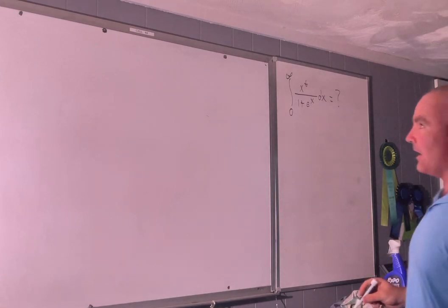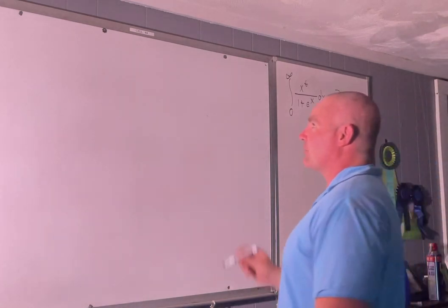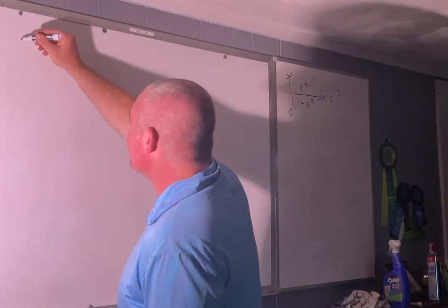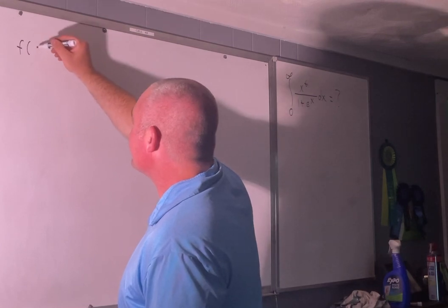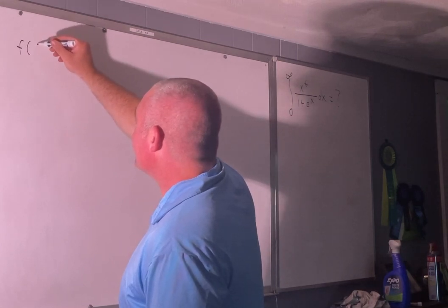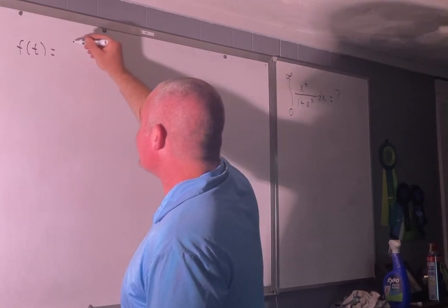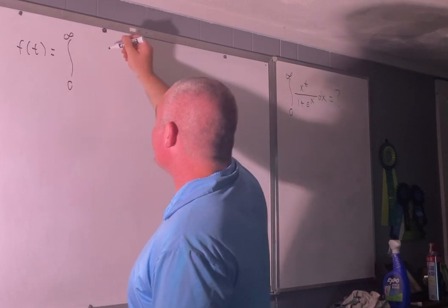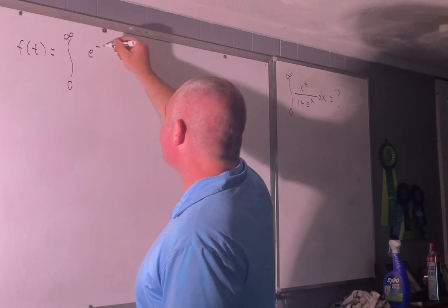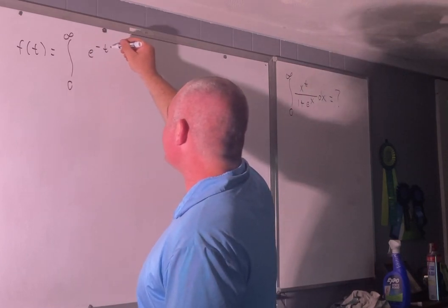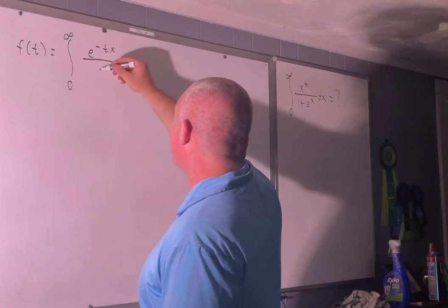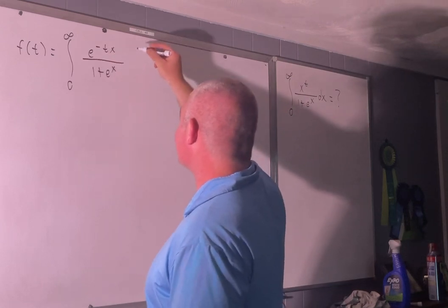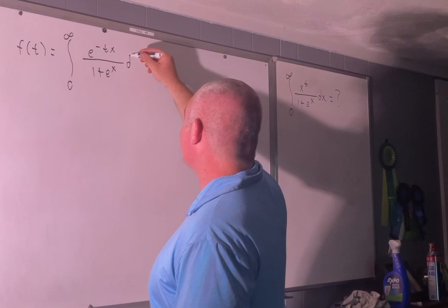So this is what I came up with — it's kind of a roundabout way — but what we're going to do is start with a function of t equal to the integral from 0 to infinity of e to the negative tx over 1 plus e to the x, dx.